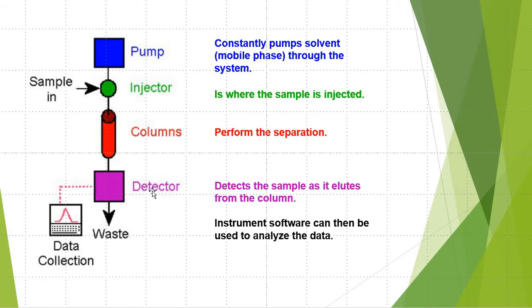As the polymers go through the columns, they will then go through the detector, which sends raw data to the data collection software. After the polymer sample goes through the detector, it will go to a waste container.